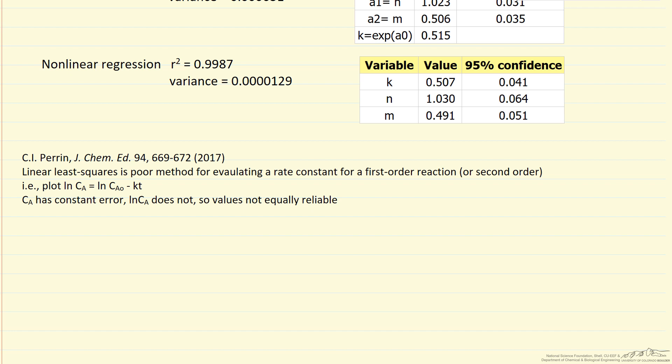And they point out that concentration has a constant error, but the log of the concentration does not. And so therefore these values aren't equally reliable. And part of the assumption of the least squares is that we're weighting all the values equally at low concentrations and at high concentrations.